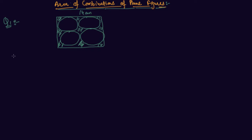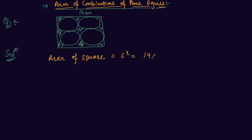This is a typical example of area of combination of plane figures, and knowing how to proceed with these types of questions is very important. First we have to find out the area of the square. Area of square is side squared, so it should be 14 into 14, which equals 196 centimeter square.